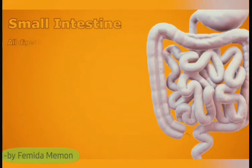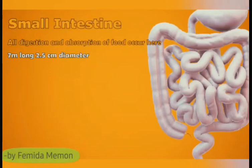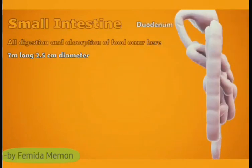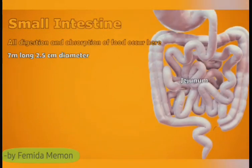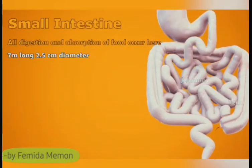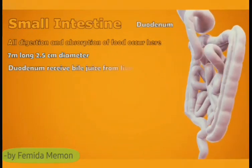Small intestine: It is the most important part of the alimentary canal because all digestion and absorption of food occur here. It is a long coiled tube about 7 meters long and 2.5 cm in diameter, situated in the lower part of the abdomen. It is divided into 3 parts: Duodenum — the C-shaped first part; Jejunum — the coiled middle part; Ileum — the final section leading to the large intestine.